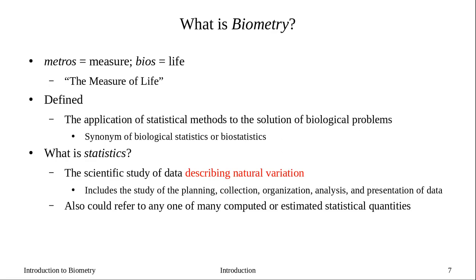The alternative definition of statistics is that it's any estimated quantity that comes from the data. A mean is a statistic, the variance is a statistic, a proportion is a statistic, and so forth. Statistics is all about describing natural variation — we want to try to control it, or at least assign certain amounts to random chance, so we can identify what part of the variation is due to our experiment or manipulation.